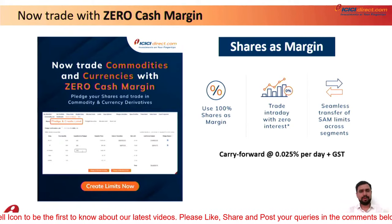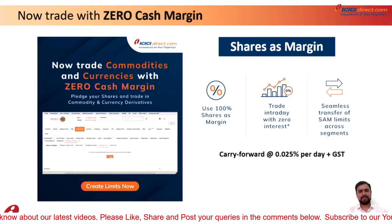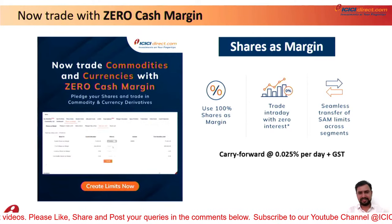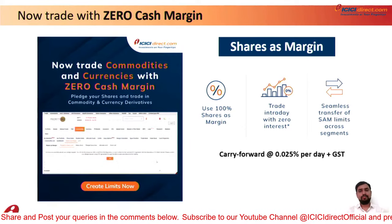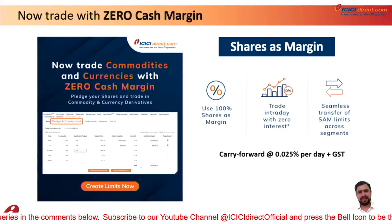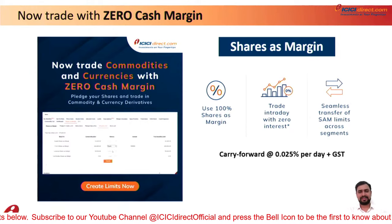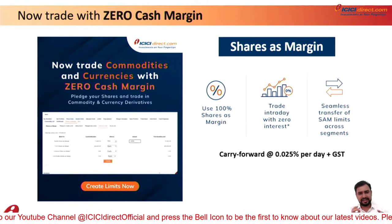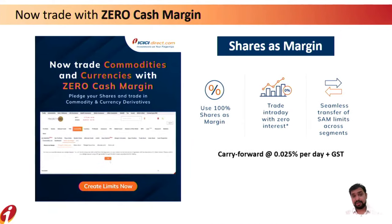This facility was earlier available only for equity and equity derivative segments — equity intraday trading or futures and options of equity derivatives — but now it has also started for Commodities and Currency. A key important point: at ICICI Securities you can take positions in commodity futures or options, or currency futures or options, with 100% shares as margin. For example, if the margin requirement for crude oil futures is one lakh rupees, that entire one lakh can be funded by shares as margin.